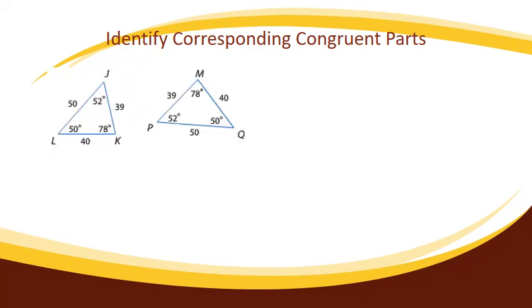Okay, well, here we got another example of where we're identifying corresponding congruent parts. And here we have our triangle. We have two triangles, and they're both labeled as to angle measurements and side lengths.